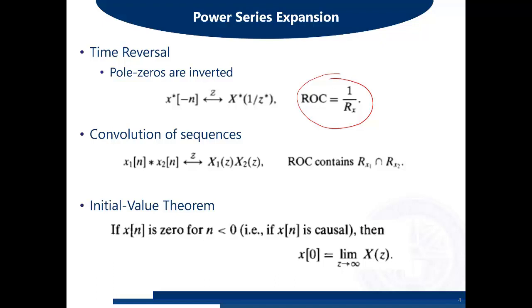The initial value theorem says that if X(n) is zero for n less than 0, that is if X(n) is causal, then X(0) equals the limit as Z approaches infinity of X(z). So if you put Z approaches infinity in X(z), you will end up obtaining X(0). This is the initial value theorem.